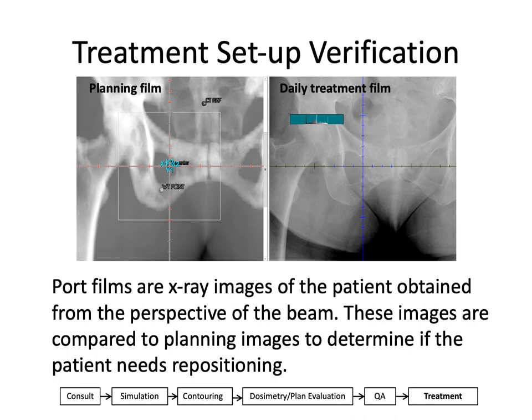Port films are really just x-ray images of the patient taken by the treatment beam from the perspective of the treatment beam. They can be used to compare to a digitally reconstructed radiograph based on what you took at CT simulation. Because they're taken with the beam, the bony anatomy is often not quite as clear. On the left, this is your planning film — a reconstruction of your CT scan — and then on the right, this is your daily treatment port film. You can see the bones aren't quite as bright because you're taking it with an MV image as opposed to a KV, but you can get a sense of the shape of the beam and the patient's setup.